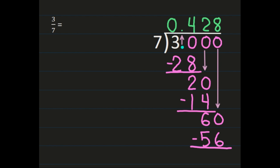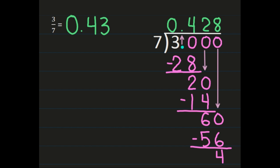Now I've gone far enough to determine whether I'm going to have a repeating decimal, a terminating decimal, or a decimal number where I need to round. So 3 sevenths is going to equal 0.43 because I'm going to round to the hundredths place, which is where the 2 is. Behind the 2 is an 8, which means I'll need to round up and make that 2 a 3. So 3 sevenths is approximately equal to 0.43.